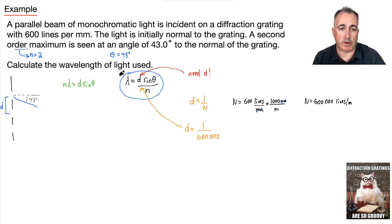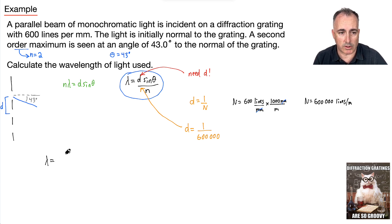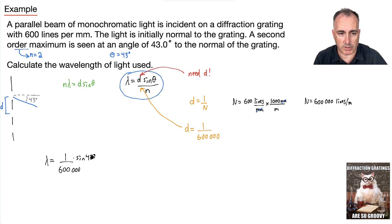Now I'm ready to solve for lambda. Lambda equals D — which is 1 over 600,000 — times sine theta, so sine of 43 degrees, divided by N, which is 2.